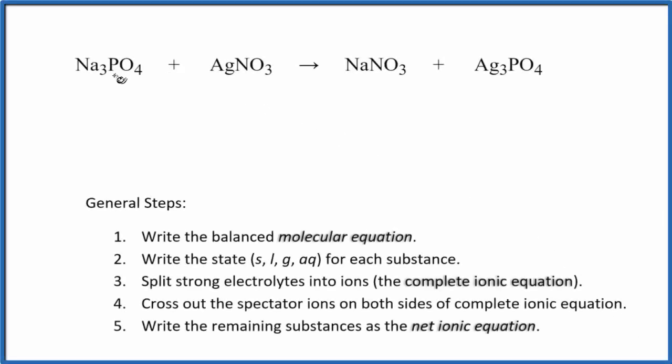In this video we'll write the net ionic equation for Na3PO4 plus AgNO3. This is sodium phosphate plus silver nitrate. First thing we need to do is balance the molecular equation. This is the molecular equation here. Looks like if we put a three and a three there, that would be a balanced molecular equation.